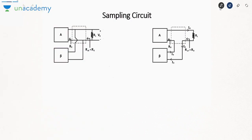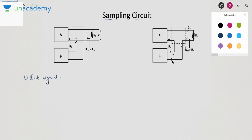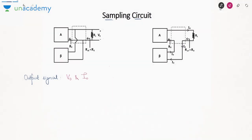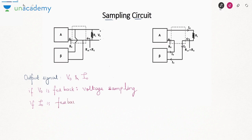First, let us talk about the sampling circuit. The sampling circuit takes the output signal. When we talk about output signal, there are two possibilities: V0 and I0. If V0 is fed back — that is, you are taking the output voltage — it is called voltage sampling. If I0 is fed back — that is, you are taking the sample of current — it is called current sampling. So there are two types of sampling: either voltage sampling or current sampling.